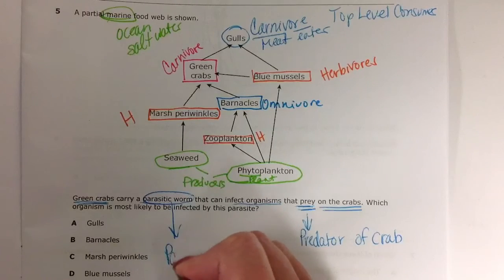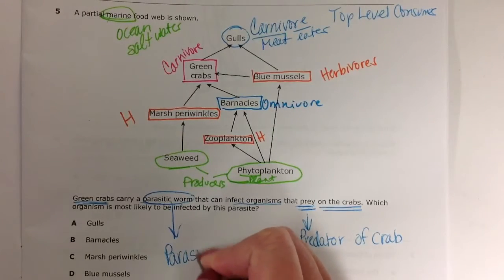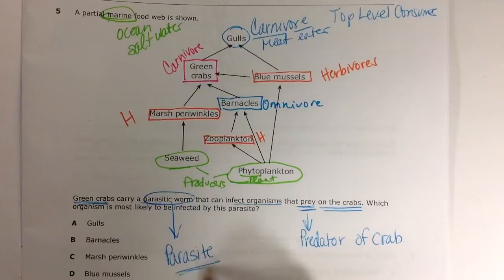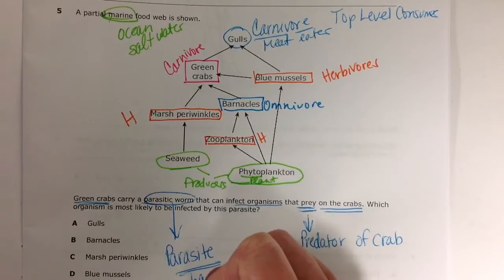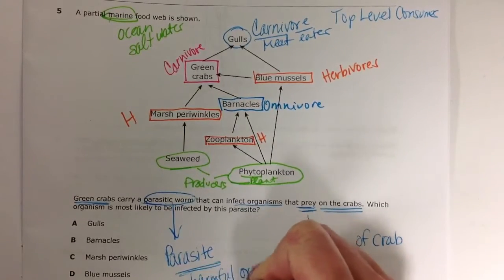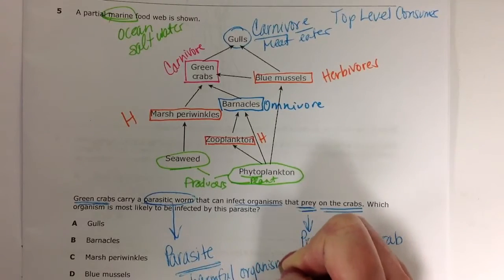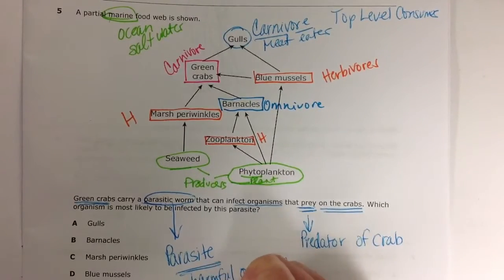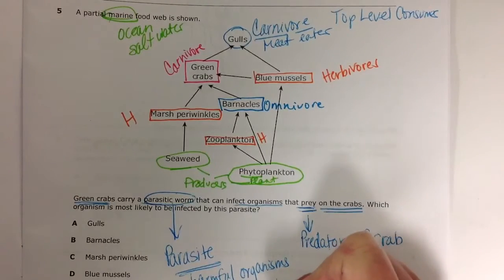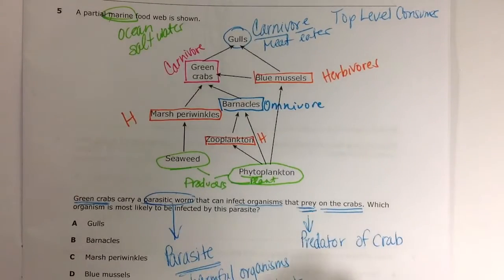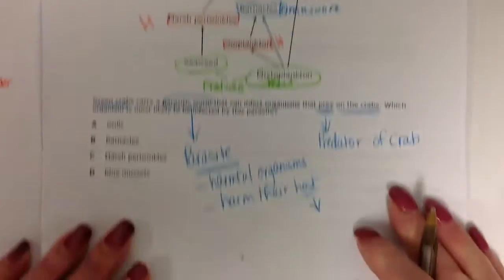Parasitic means a parasite. Parasites are harmful organisms. Meaning they harm their host, the organism they live on or with. The host is the organism they live on or with.